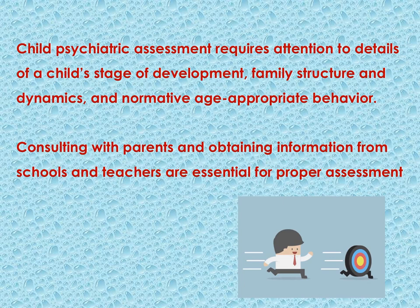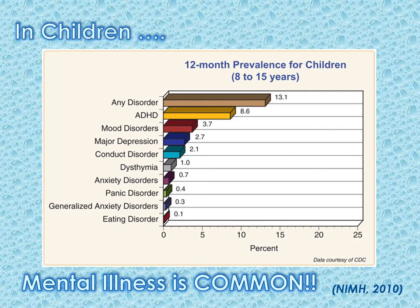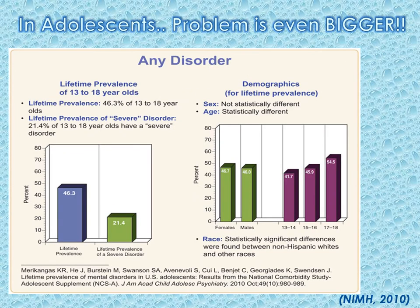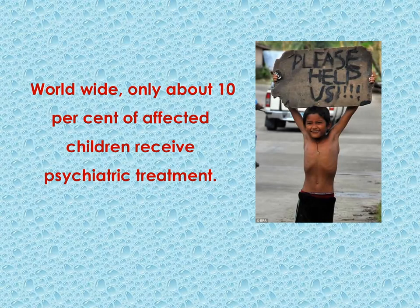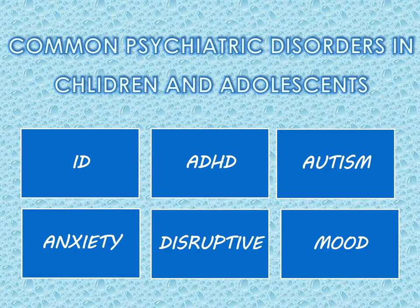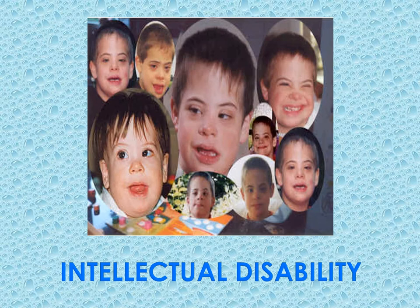Child psychiatric assessment requires careful consideration. Psychiatric disorders are prevalent in children and adolescents worldwide, and only about 10% of affected children receive treatment. We will talk in this lecture about intellectual disabilities, ADHD, autism spectrum disorder, disruptive behavior disorders, and some points about anxiety and mood disorders in children and adolescents. We start with intellectual disabilities.